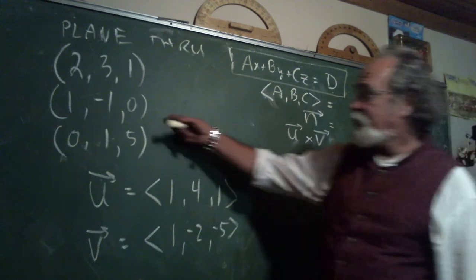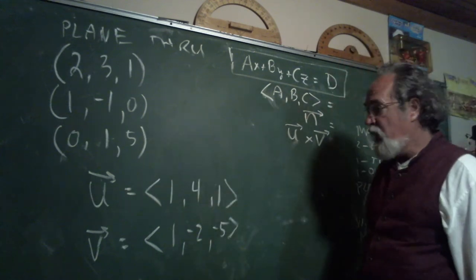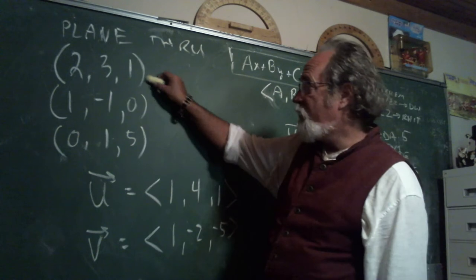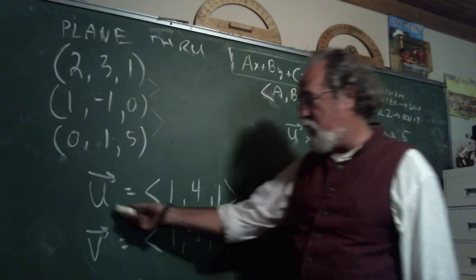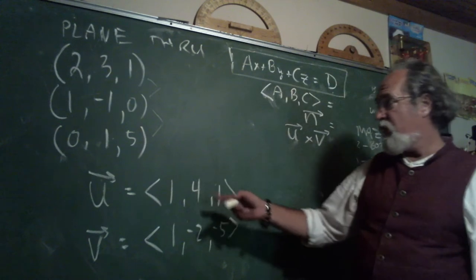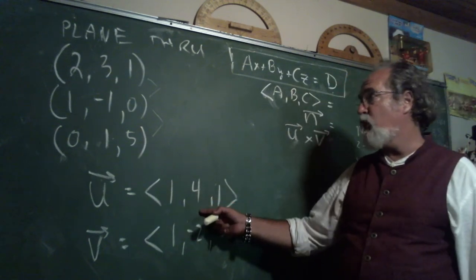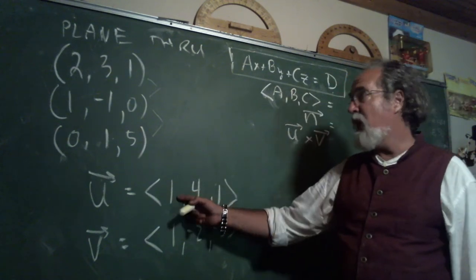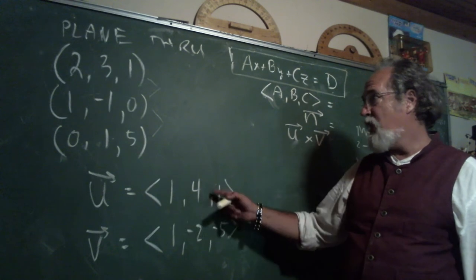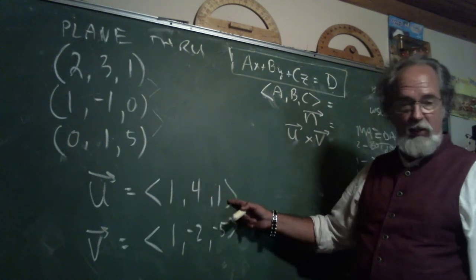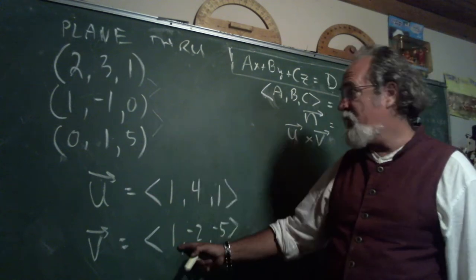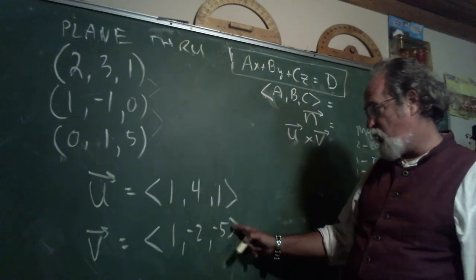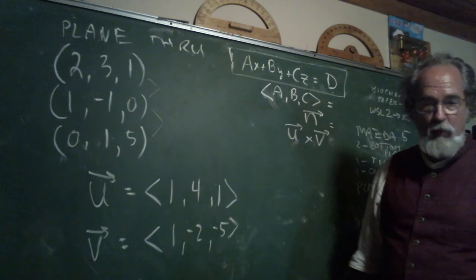Well, here's our three points. Now here's what you do. You get a vector from two of the points and a vector from another two of the points. I'm calling them U and V. So I took the 2, 3, 1 vector and subtracted the 1, negative 1, 0. So 2 minus 1, 3 minus negative 1, 1 minus 0. And then I did these two, 1 minus 0, negative 1 minus 1, 0 minus 5. Now I'm going to do the cross product of these.